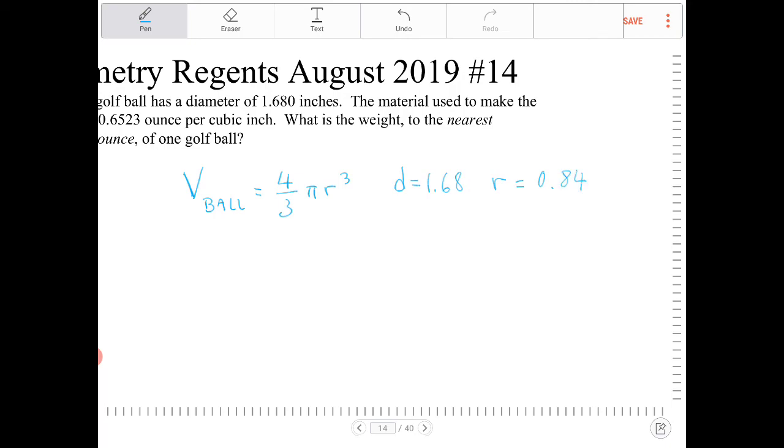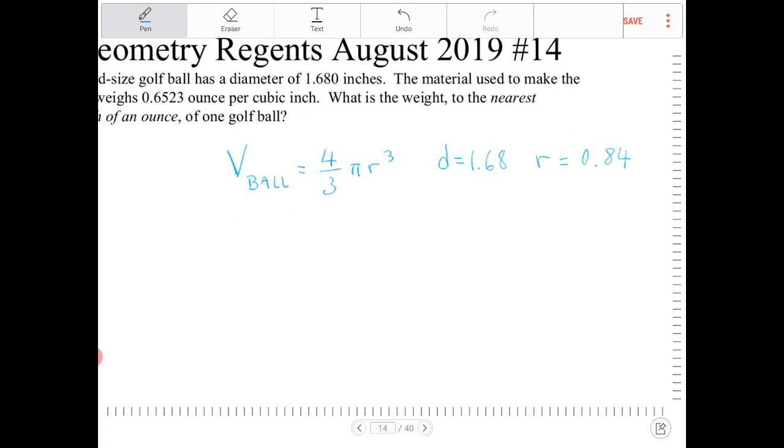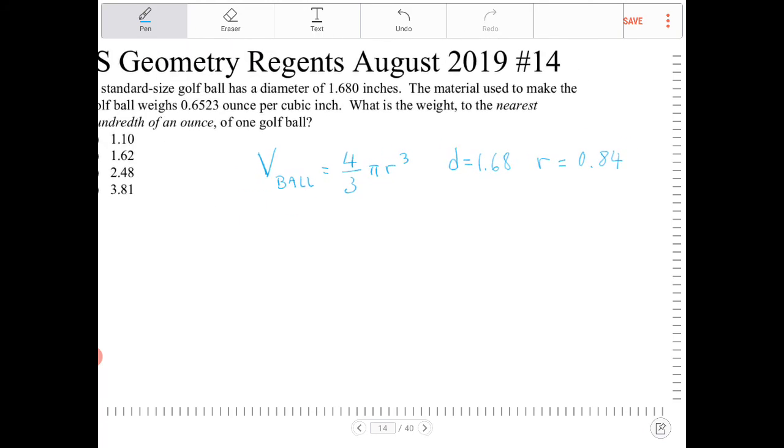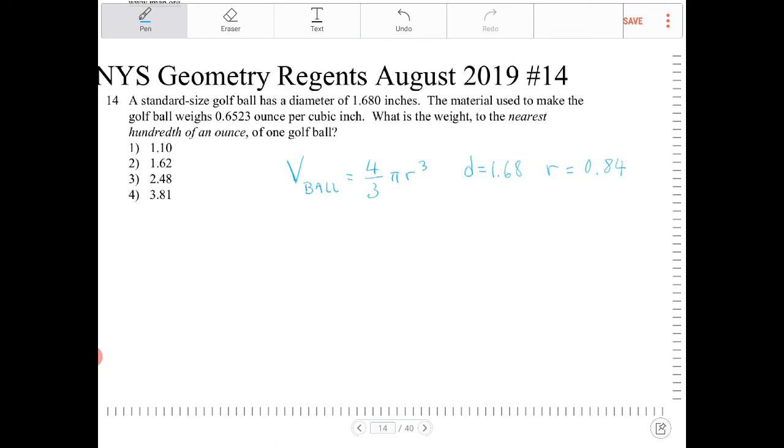And so once we find out what the volume is of the ball, then we can multiply that volume with the density to determine the weight. So let's substitute that in. So v is equal to four-thirds pi times 0.84 cubed. And let's see what that is on the calculator.